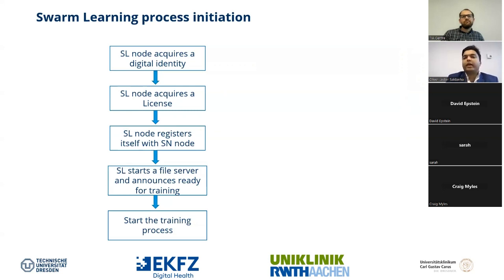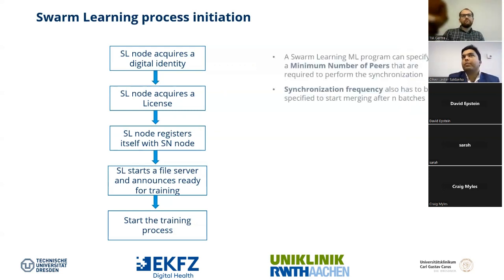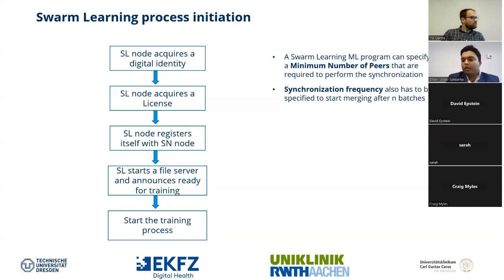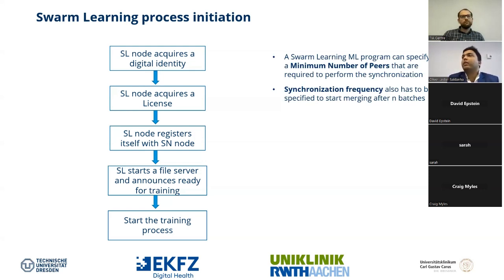The process flow begins with acquiring digital identity, then license acquisition, after which swarm learning signals that file server movement is ready and training can start. Two important parameters to configure: the minimum number of peers — if you have 10 partners you can set it to 10, or as low as 2 — the system waits until this threshold is reached before starting the merging process. The synchronization frequency defines after how many mini-batches the merging or parameter sharing occurs.